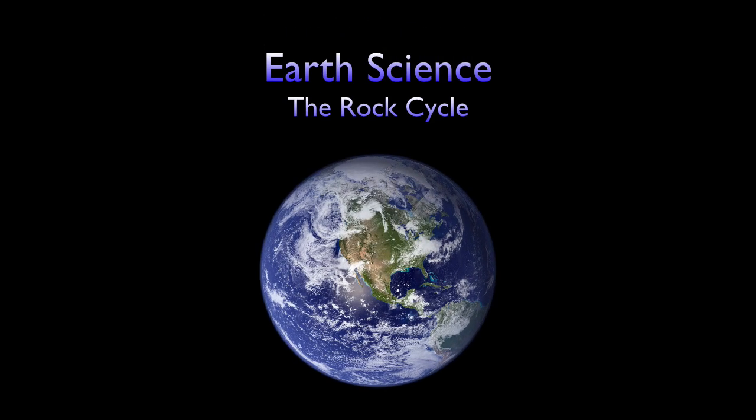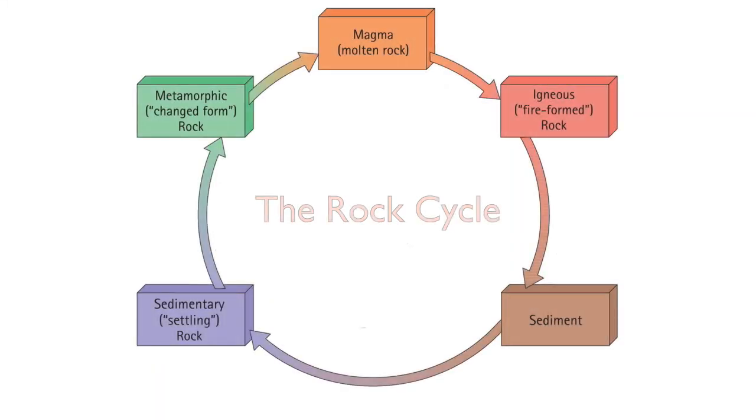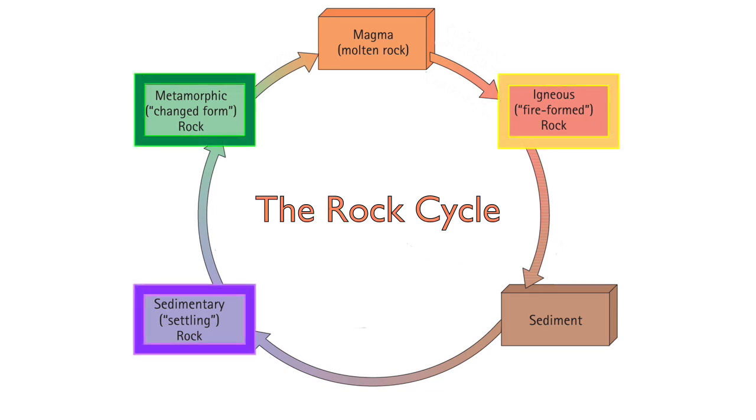Earth science: the rock cycle. The concept of the rock cycle puts the relationship between the three rock types into a visual perspective. Igneous, sedimentary, and metamorphic rocks are each formed by different processes, but still they are related.